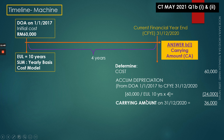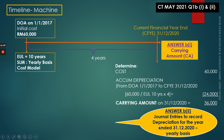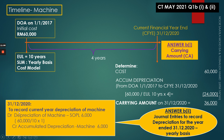For question 1B2, the journal entry to record depreciation for the year ended 31st December 2020: annual depreciation is $60,000 divided by 10 years equals $6,000. The journal entry is Debit Depreciation Expense $6,000; Credit Accumulated Depreciation — Machine $6,000. That is all that was asked for this question.